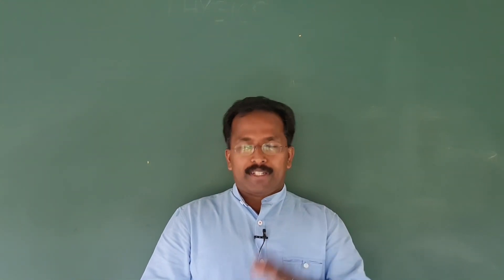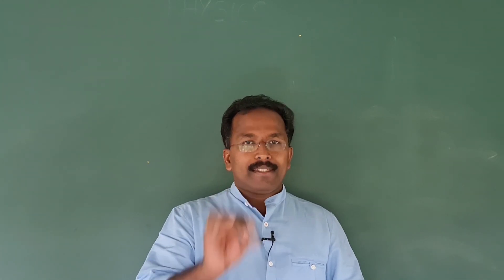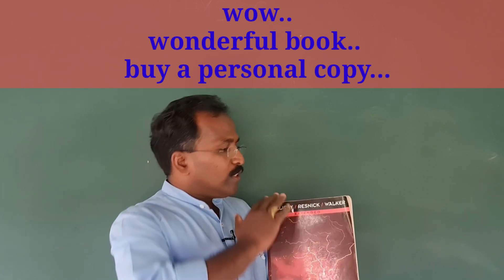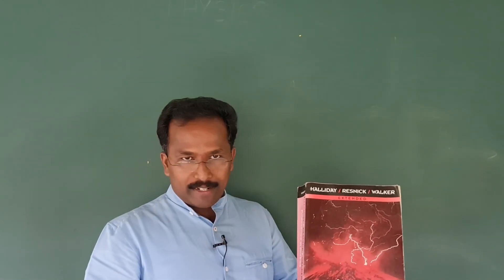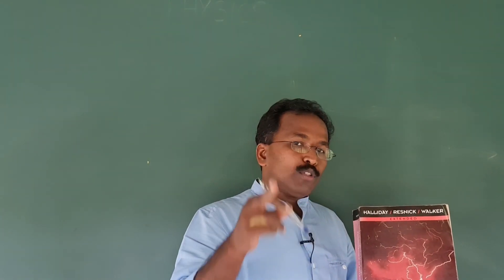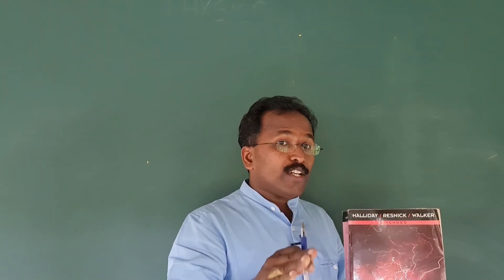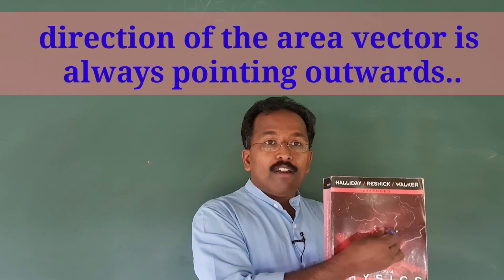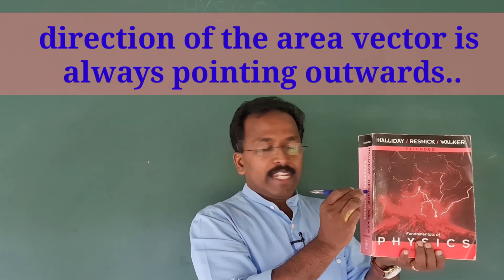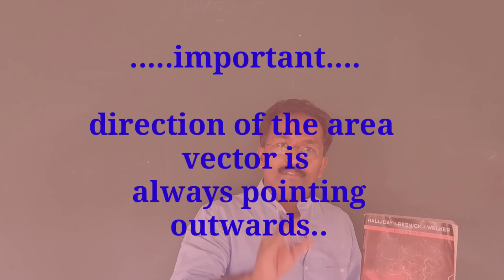Have you heard of area vector? We haven't taken area vector before, but from here on we will. It is like this: imagine you have a book. This is my physics book and you have six faces here. Just imagine how to take this area as a vector. A vector will have both magnitude and direction. The magnitude of this area vector you can calculate by measuring the dimensions. The direction of the area vector is always pointing outwards — perpendicular to the surface and pointing out. So the direction of the area vector is always pointing outwards. Remember that.